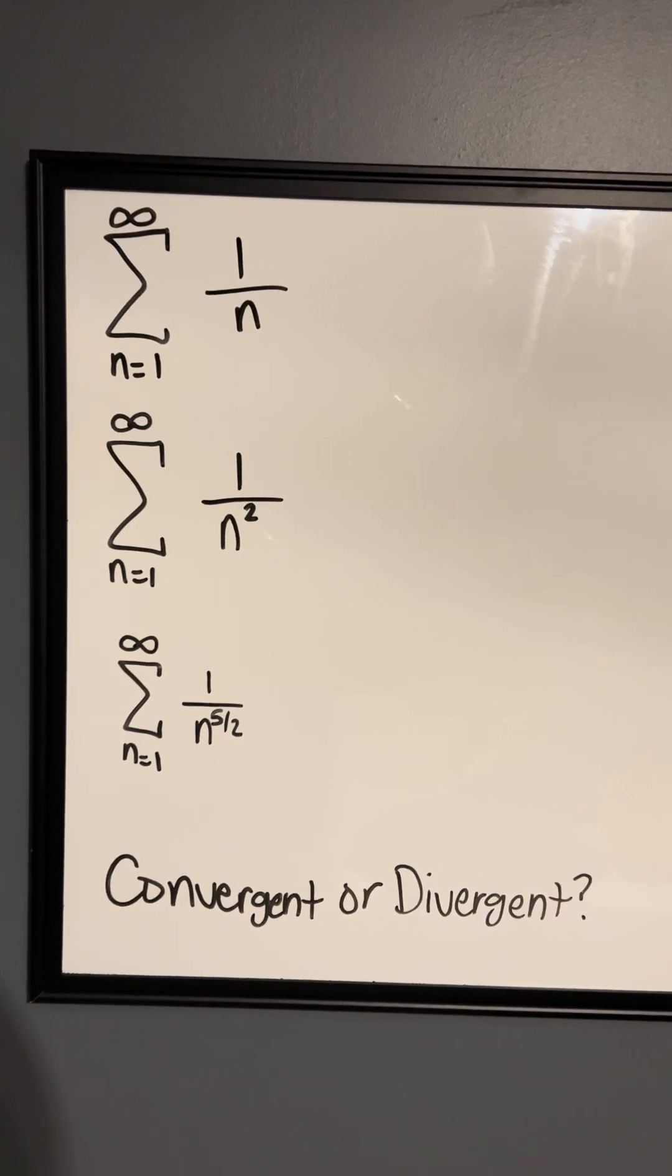All right, so let's use the definition of a p-series to decide if these converge or diverge. Now, a p-series is 1 over n to a power, and if n's power is 1 or less, then it will diverge. And if n's power is greater than 1, then it will converge.